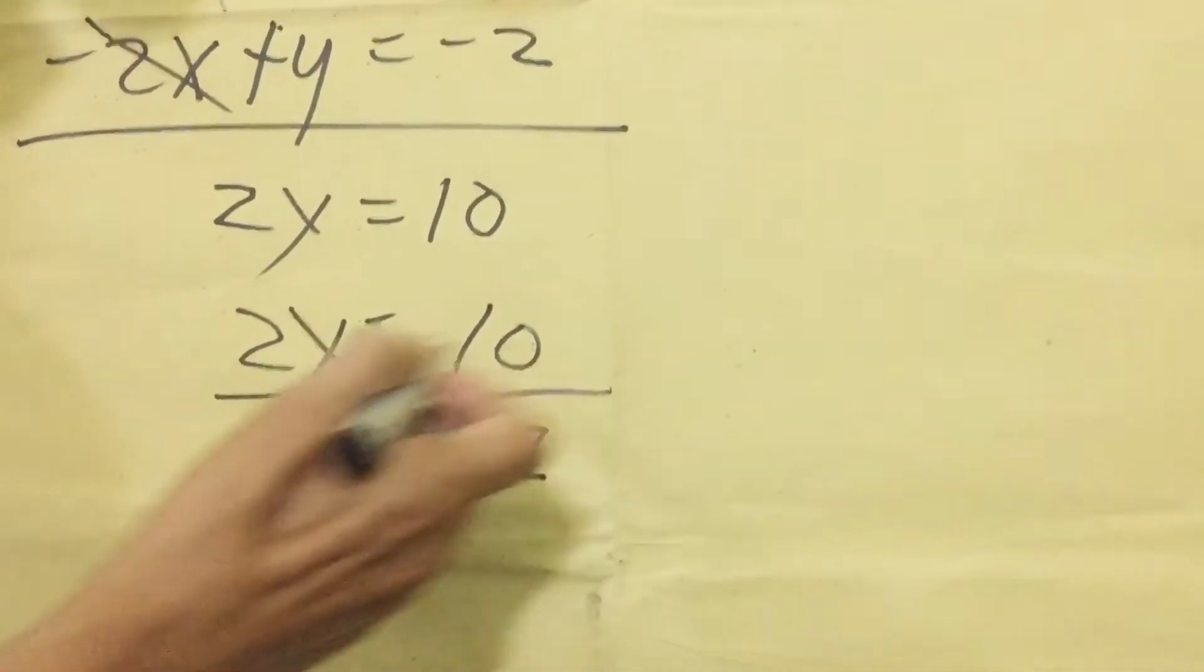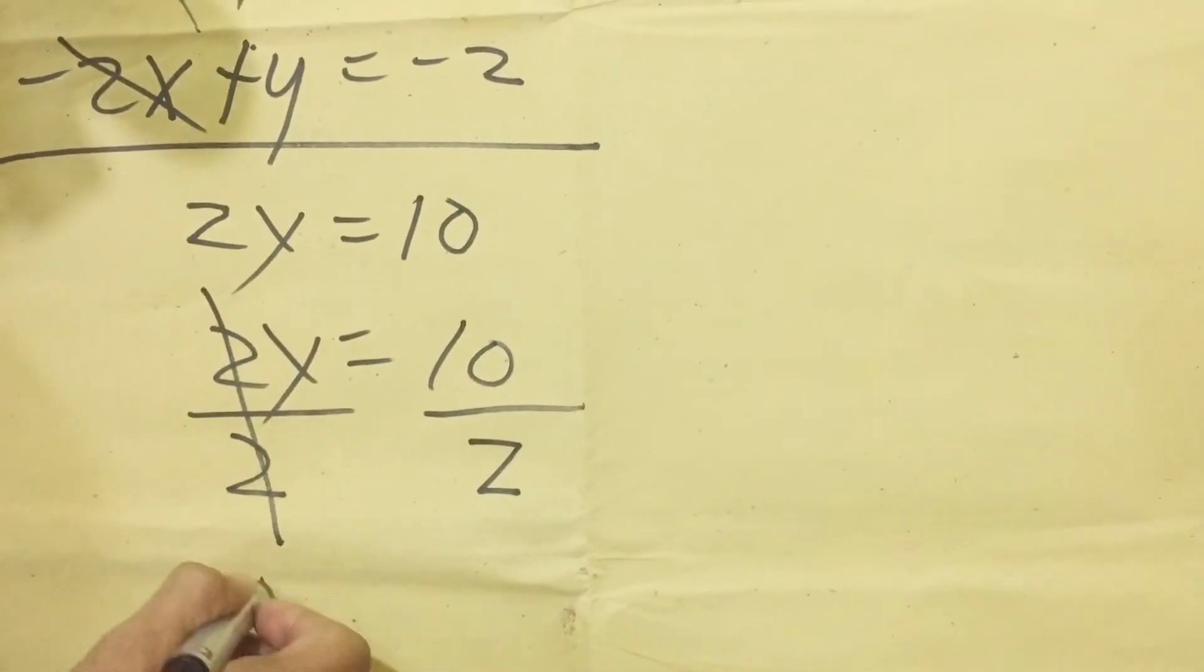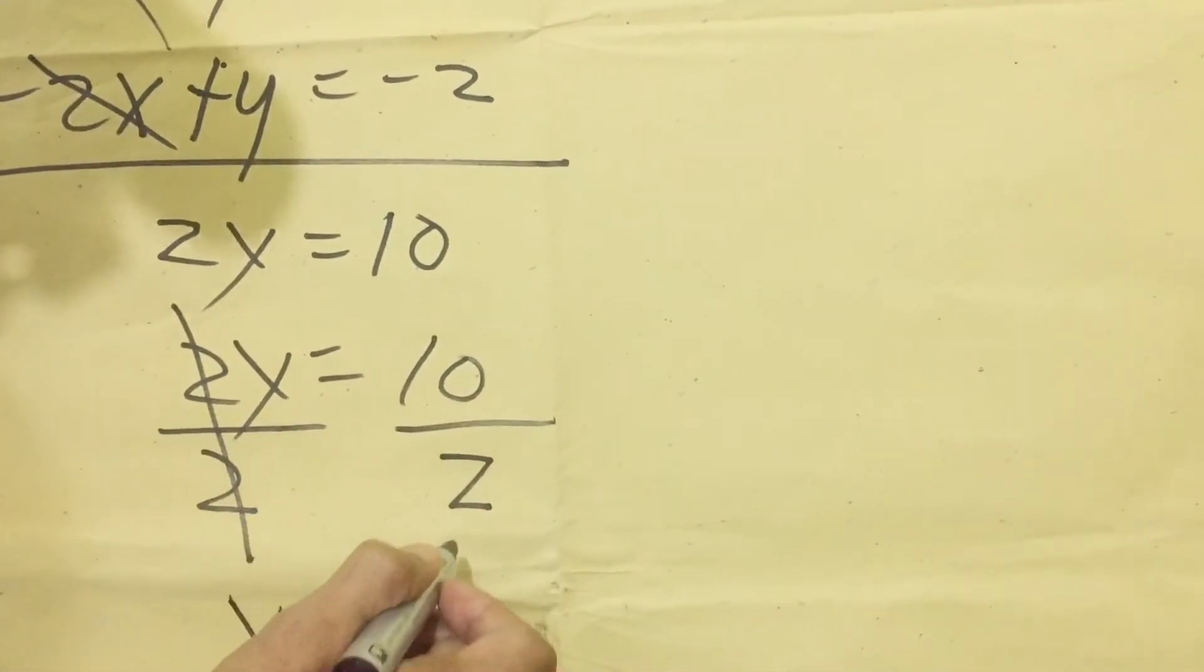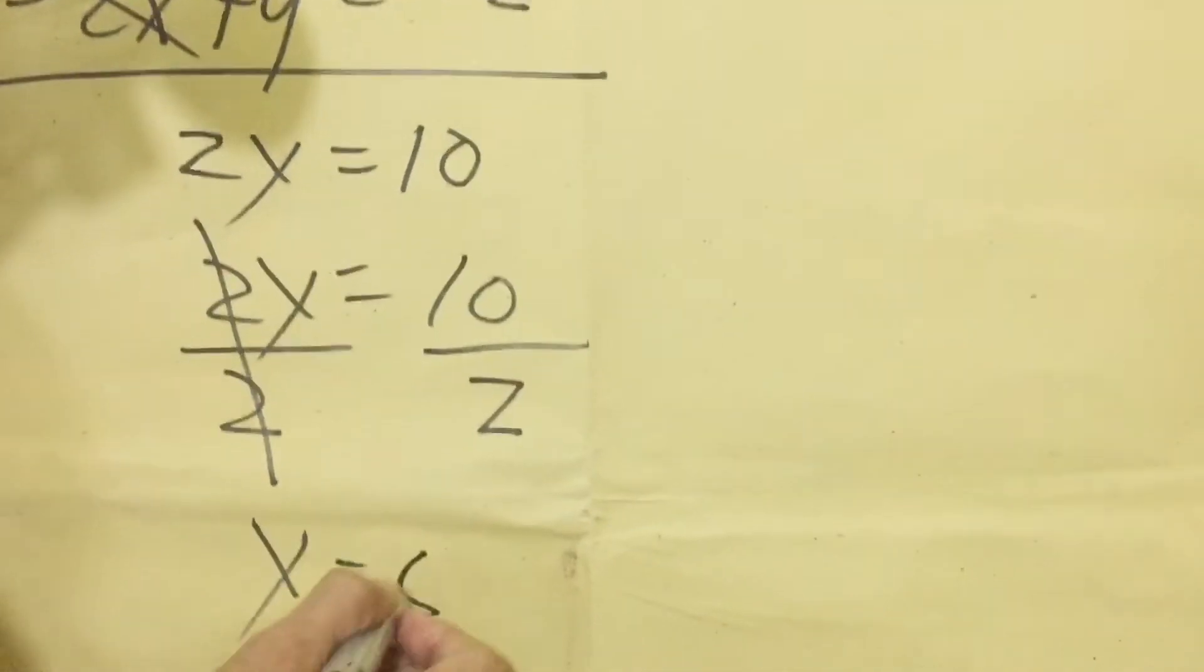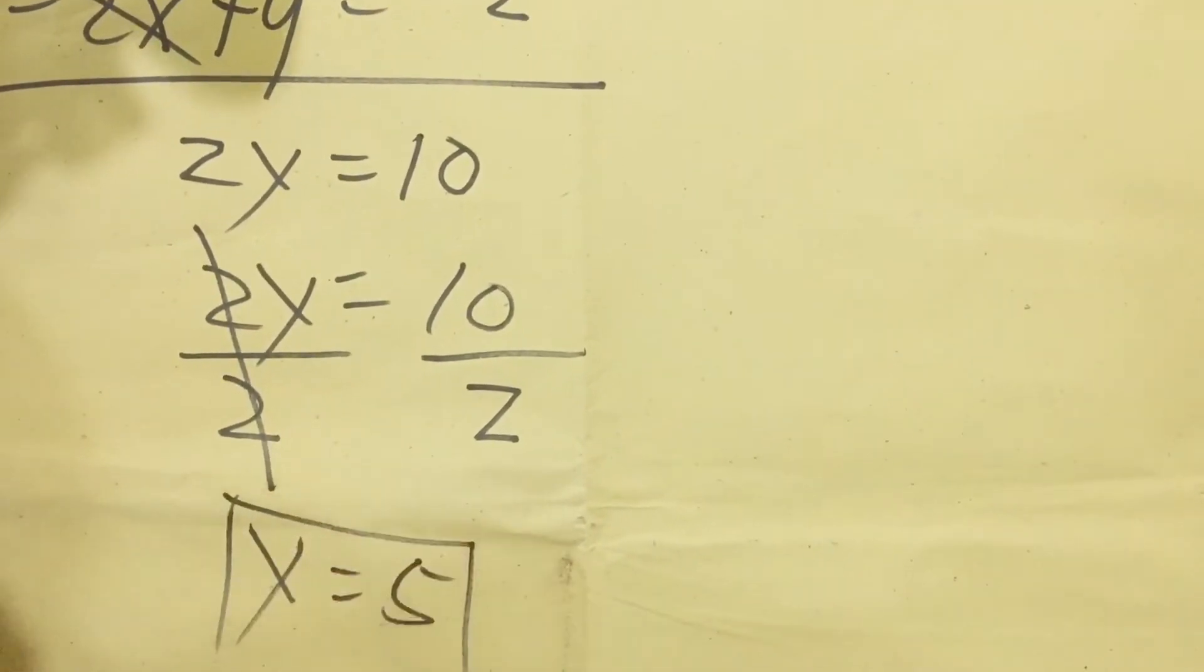If it is positive, positive also there. Then cancel, you have y equals 10 divided by 2 equals 5. So 5 is the value for y.